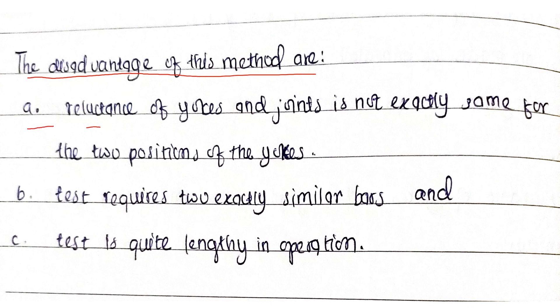First, the reluctance of yokes and joints is not exactly the same for the two positions of the yokes. Second, the test requires two exactly similar bars, and the test is quite lengthy in operation.